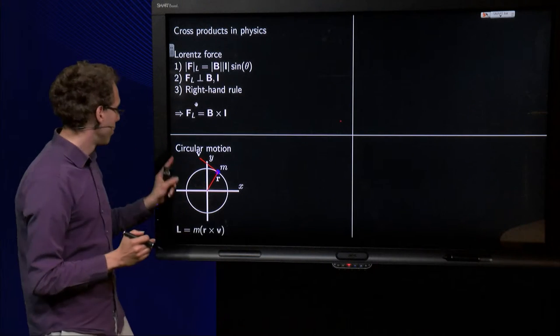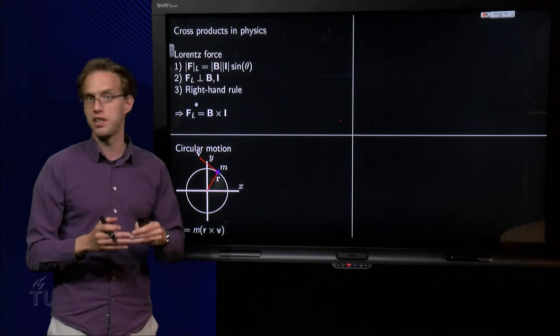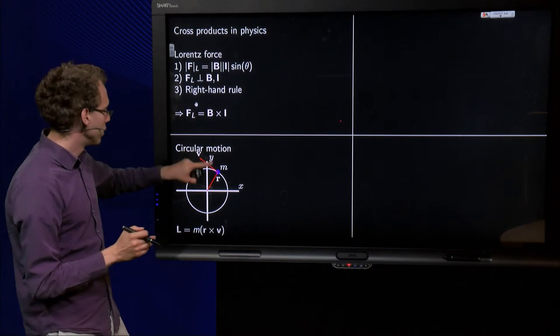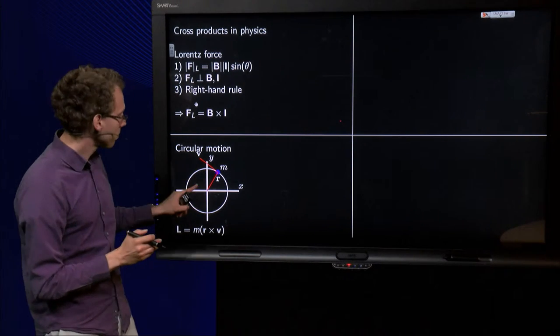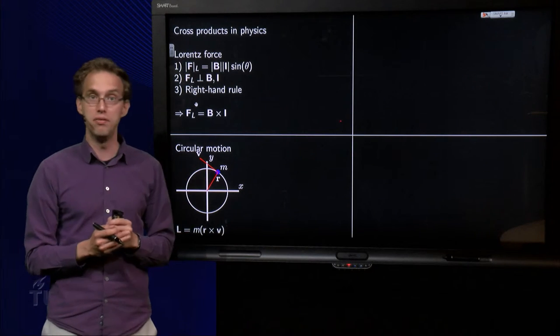On to the next one. We go to circular motion. So we have a mass, let's say point mass here, which is moving along a circle. It's distance r and velocity v.